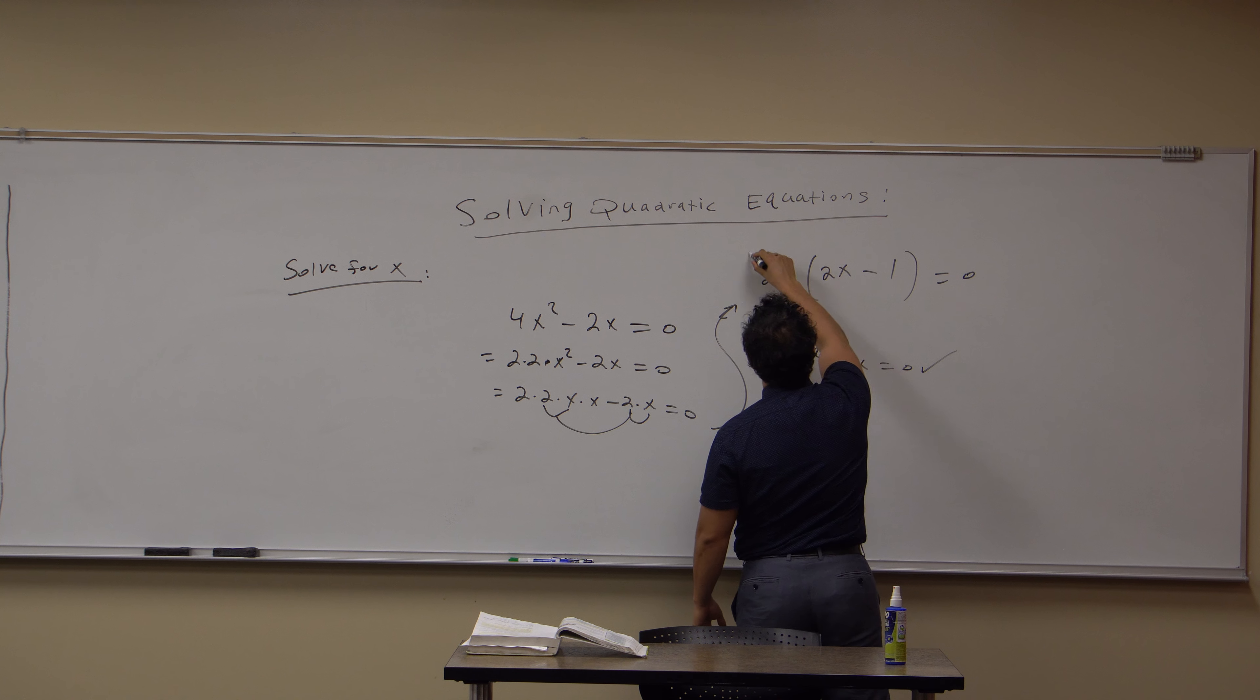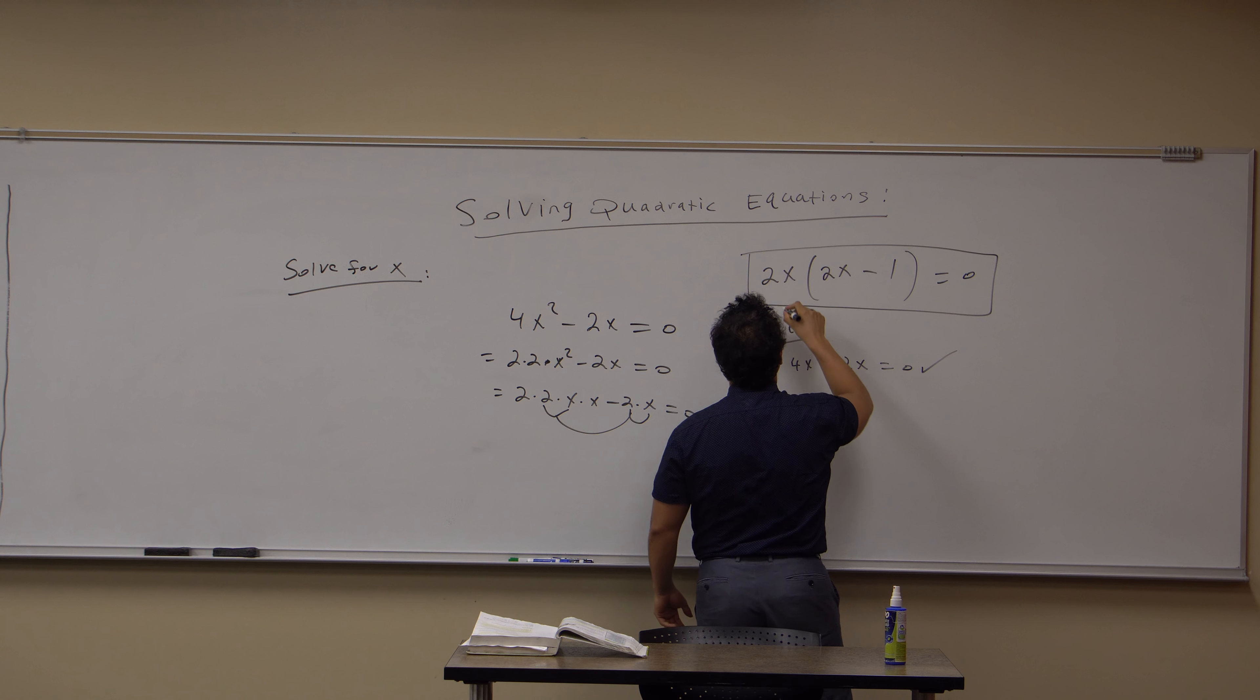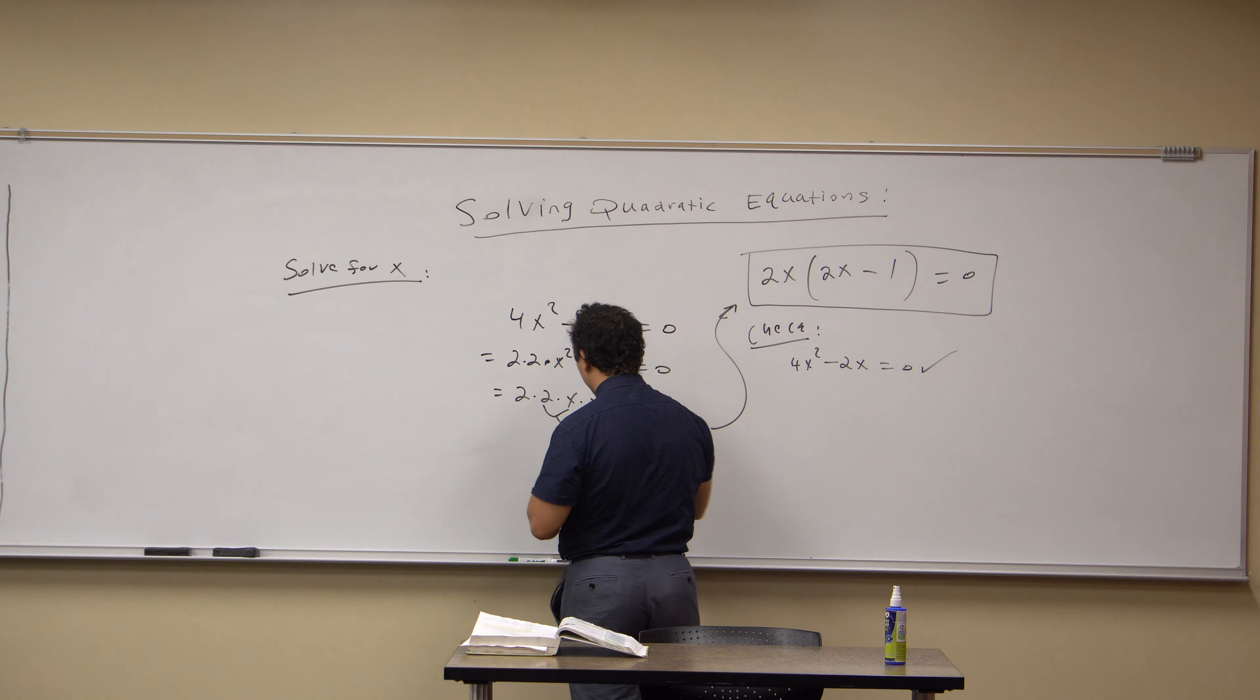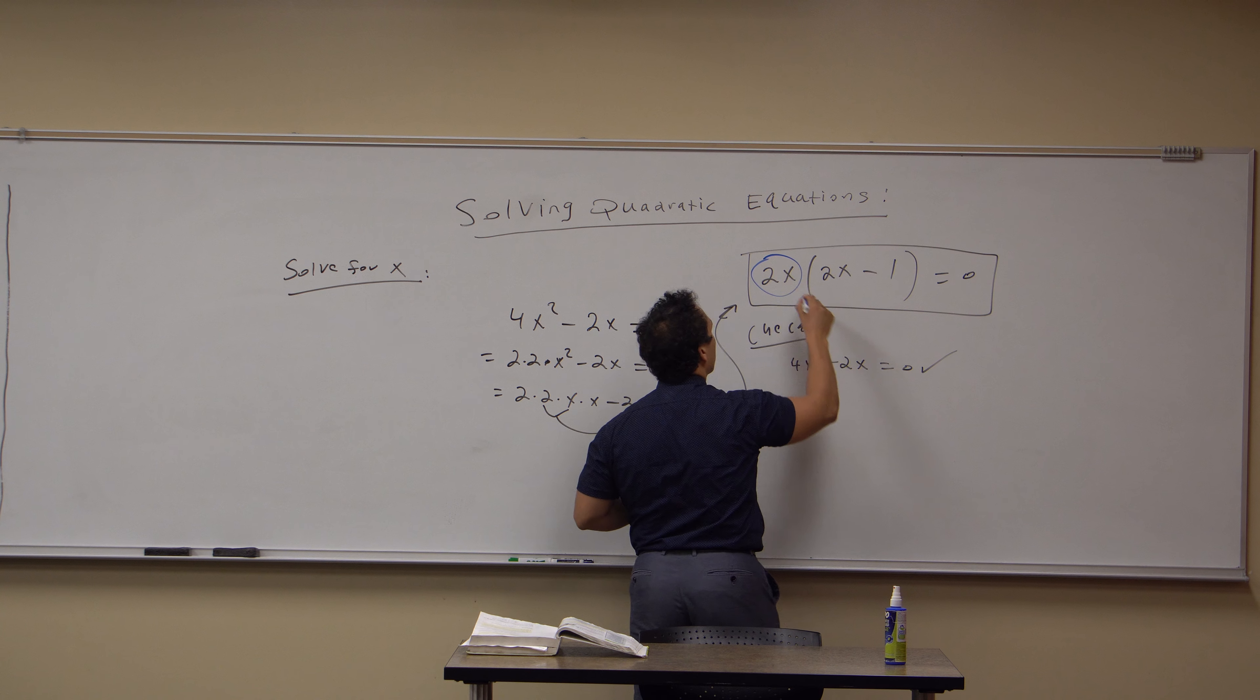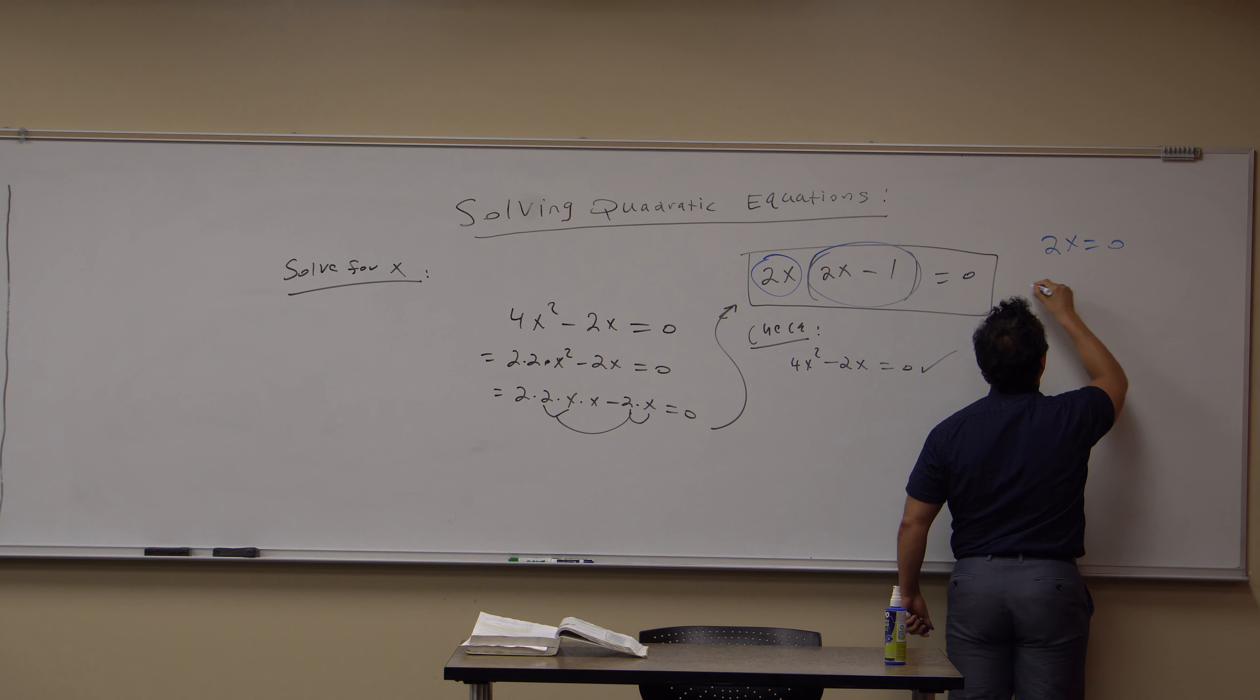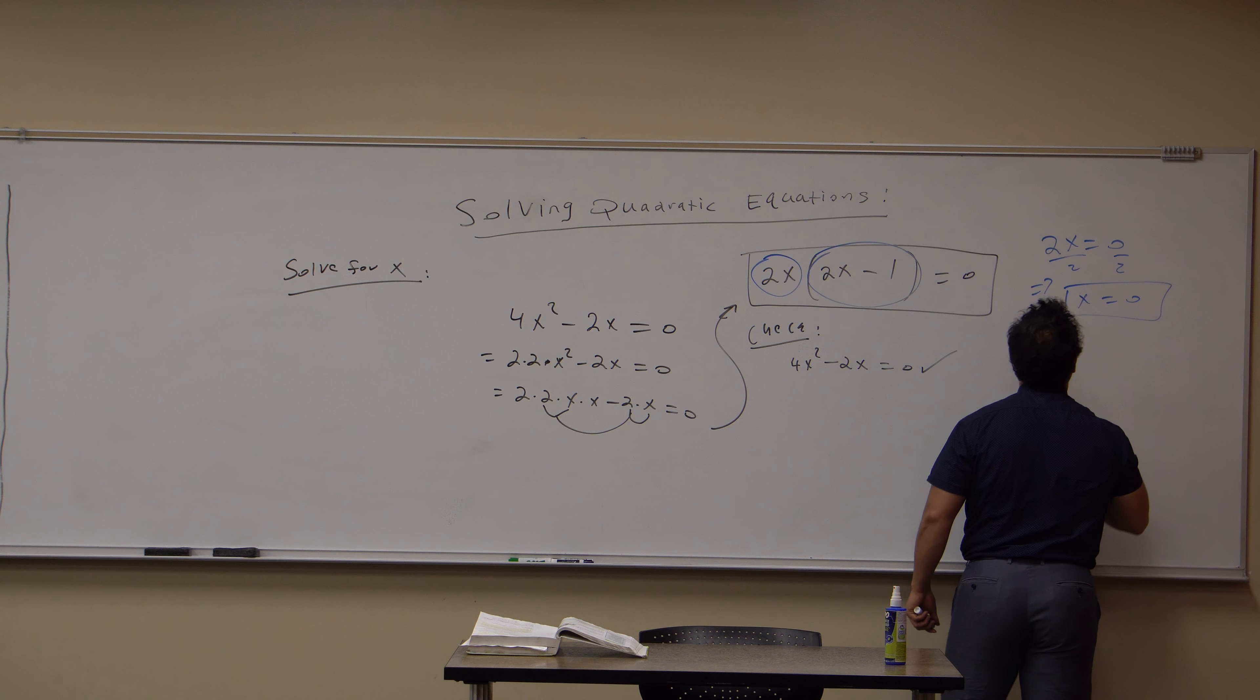Now, once we're at this phase, we can set this quantity equal to 0, and this other quantity equal to 0. So I can set 2x = 0, and when I divide both sides by 2, x = 0, because 0/2 is 0.